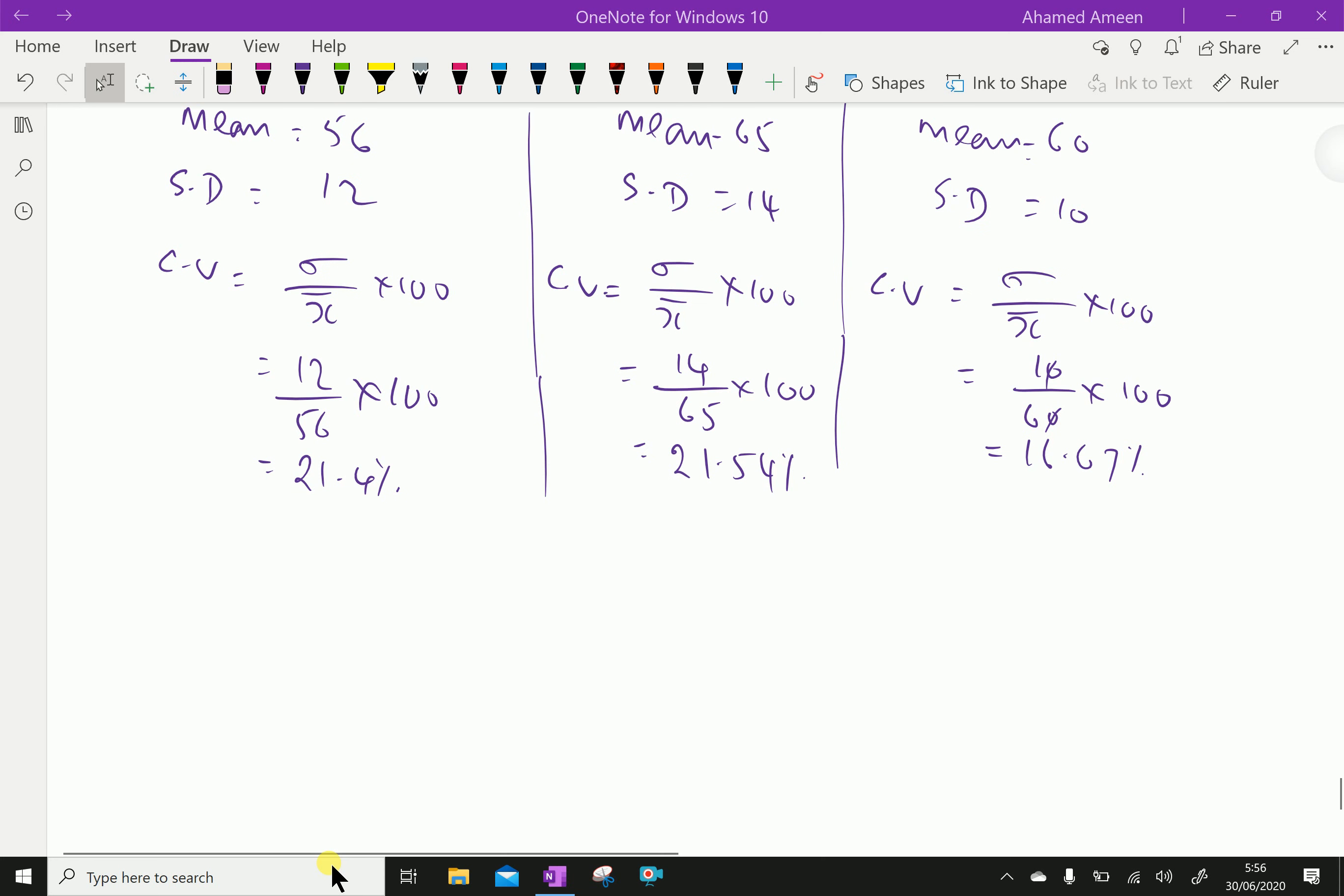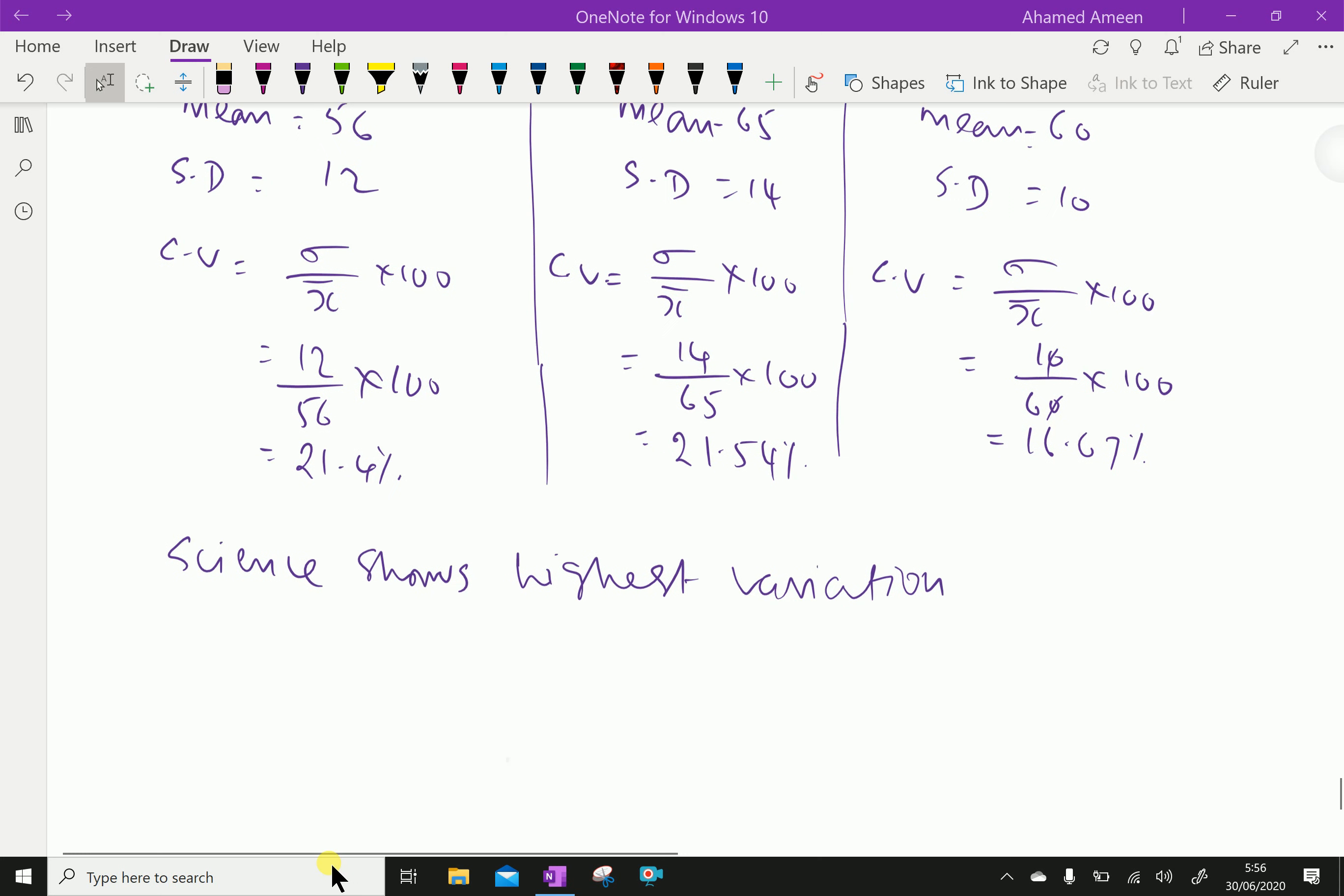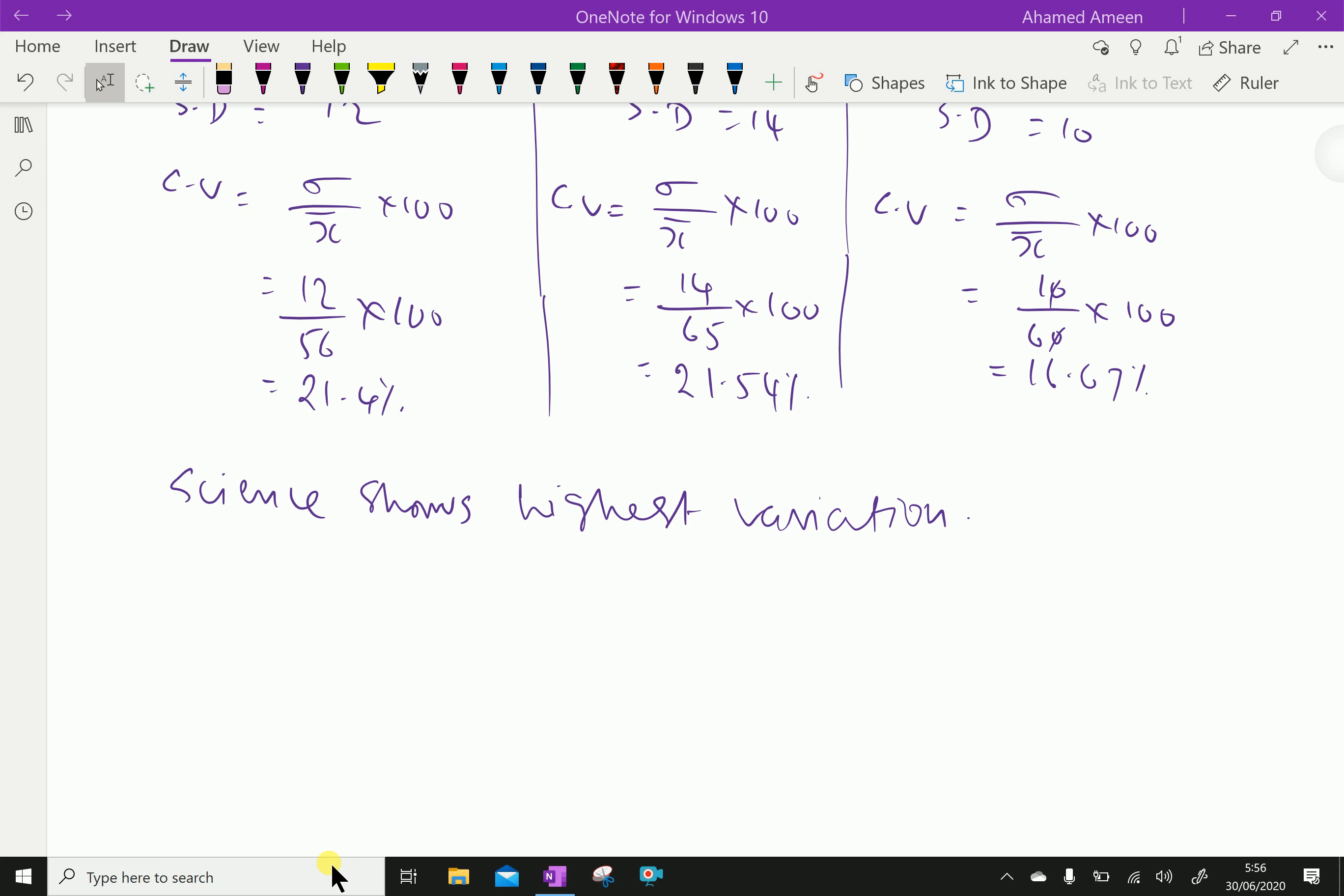The subject science shows highest variation in coefficient of variation. Social science shows lowest variation.